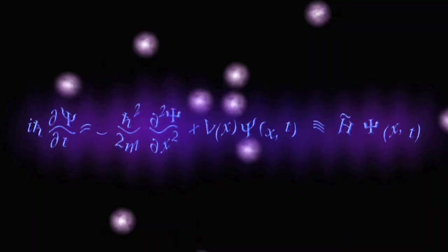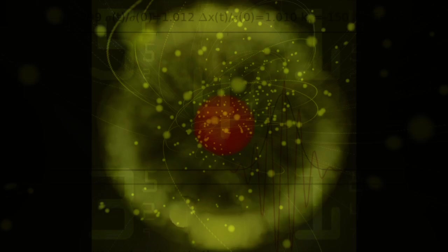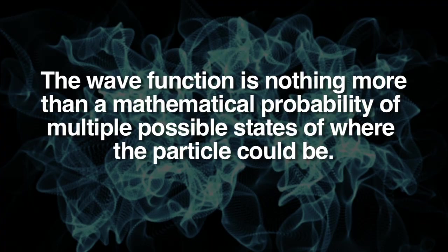Discoveries and equations formulated to explain the bizarre quantum world began to baffle physicists. The universe did not seem to be fundamentally deterministic at the bottom level, but probabilistic. The mathematics essentially described that particles would exist in a state of a wave function, which is nothing more than a mathematical probability of multiple possible states of where the particle could be, but upon measurement from an observer the wave function would collapse to one position.